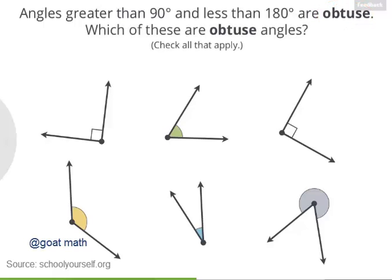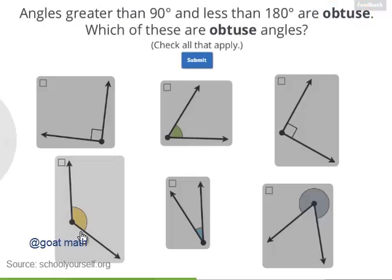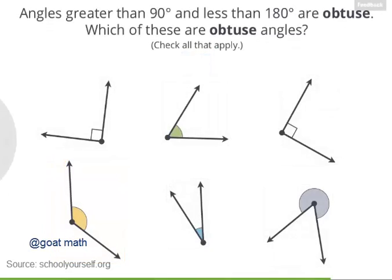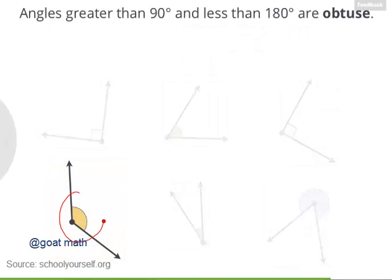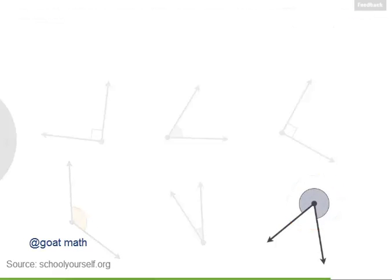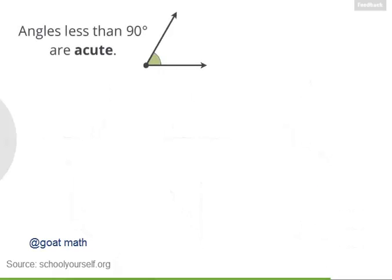Which of these angles are obtuse? Nicely done, this angle is obtuse, and it's 130 degrees. This angle over here is even bigger than 180 degrees — it happens to be 300 degrees. Angles between 180 and 360 degrees are sometimes called reflex angles.